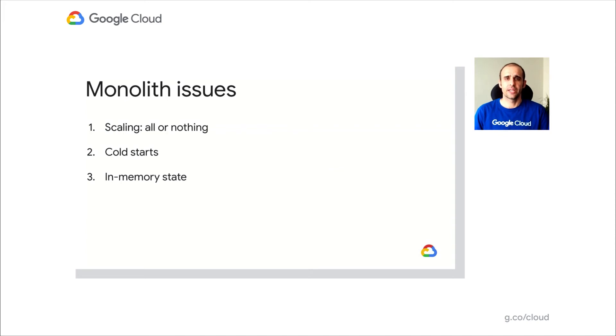And lastly, we didn't have a way to update individual services. Most of the times we didn't have to update our reader or our web API, but we had to change rules about how to transform the RSS feeds. Even though we only had to change this small piece of our application, we had to update our whole application because it was a monolith. So with these issues in mind, in stage four we started looking into how to break down the monolith into smaller microservices.